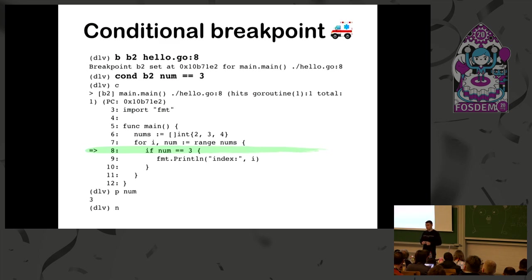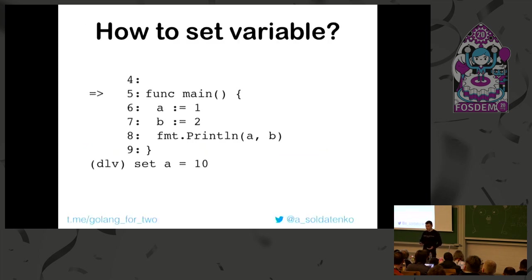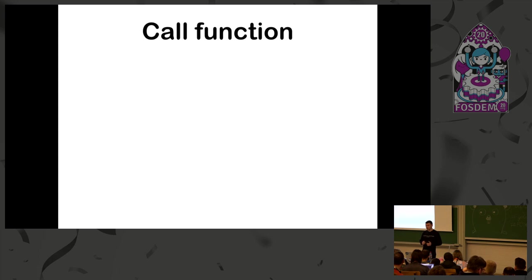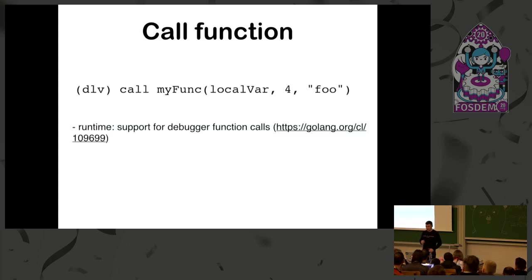Also, not a very common feature, but sometimes very useful: you can set a variable while debugging your function. If you've decided 'what happens if parameter A equals 10?' you can use 'set' and it will be 10. Also, there's a nice 'call function' feature which exists since Go 1.12 - there are two PRs, one to runtime and one to Delve.